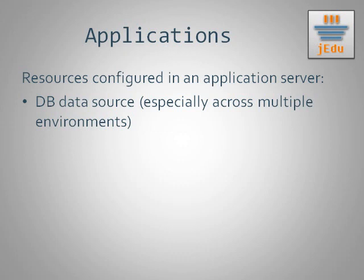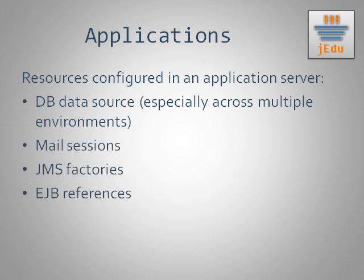Besides database connections, other resources that can be configured in J2EE in the same way include mail sessions, JMS factories, or Enterprise JavaBeans references. Now let's move on to two mechanisms that have nothing to do with Java but are essential for understanding JNDI — those are naming service and directory service.